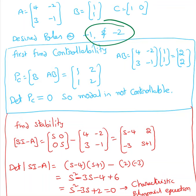First, we will find the controllability. I mean, it is not necessary to find the controllability for this example, but I want to prove something at the end. So, I found the controllability. From the controllability matrix Pc, the determinant of Pc equals 0, so the model is not controllable.